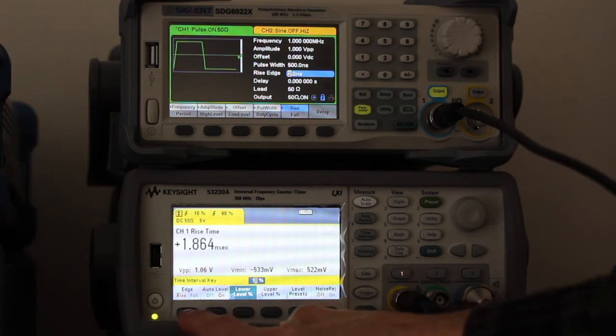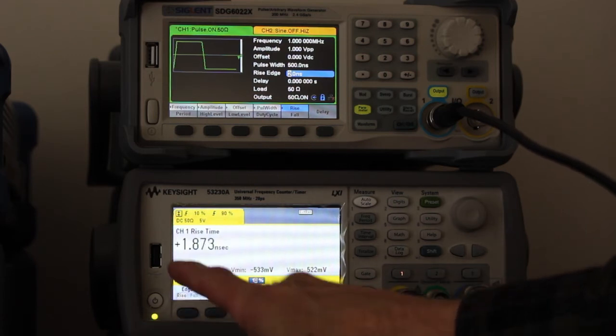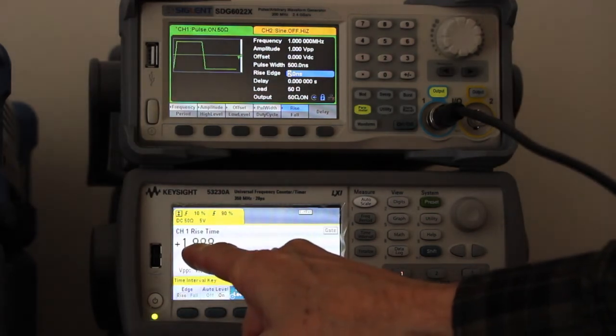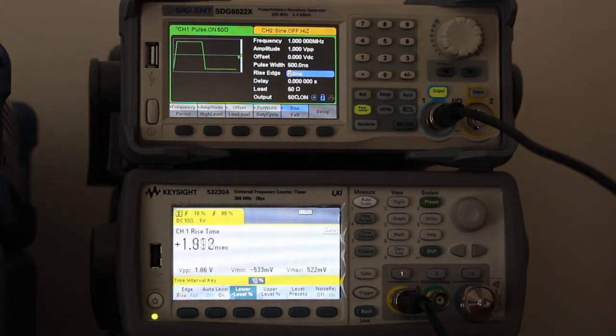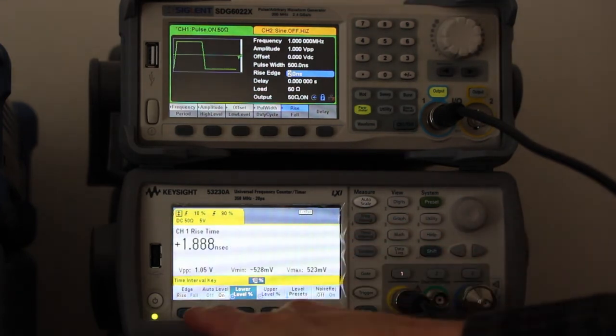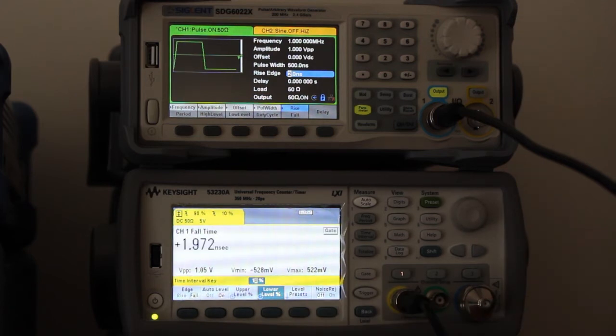You can see the Keysight is measuring 1.8, 1.9 nanoseconds, so less than 2 nanoseconds which is the minimum. And fall time 1.9 nanoseconds, also less than 2 nanoseconds.